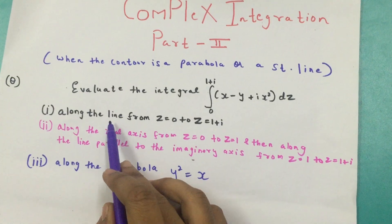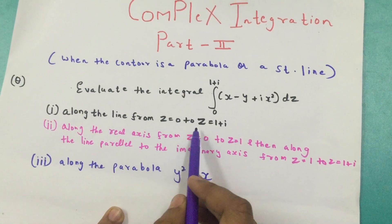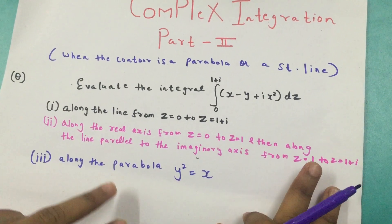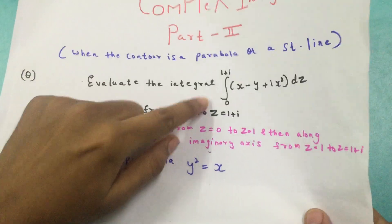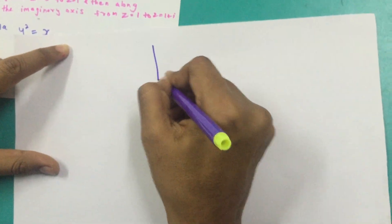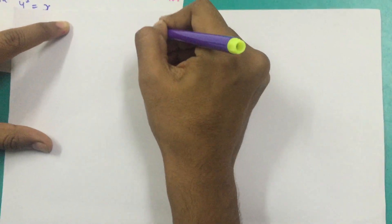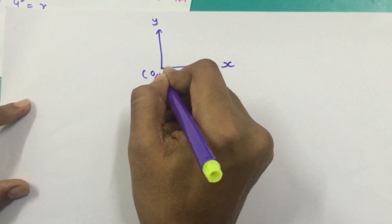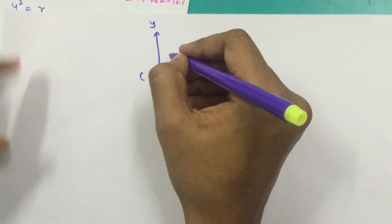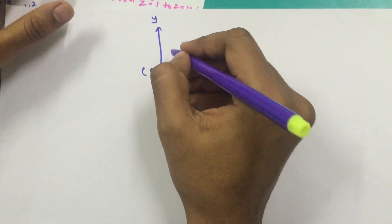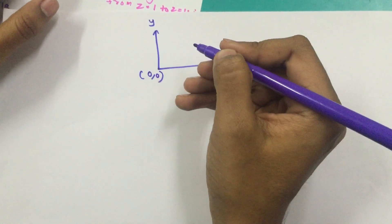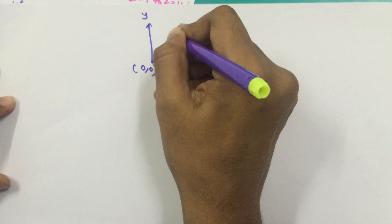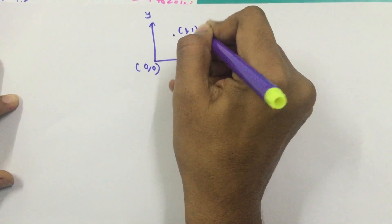The first one is along the line from z = 0 to z = 1+i. For that I am going to plot z = 0 and z = 1+i, so we will make our complex coordinate axis, that is x and iy. This is my origin and I am going from my origin to 1+i, so 1+i would be the point (1, 1).